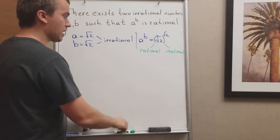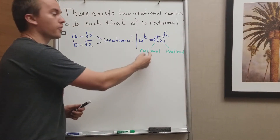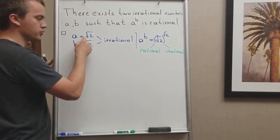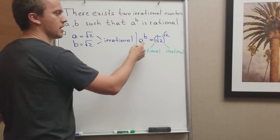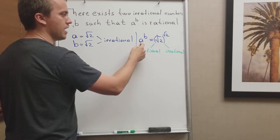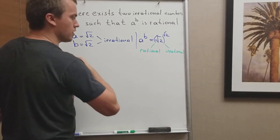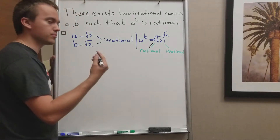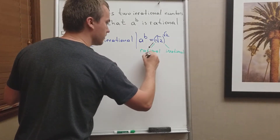So if this expression is rational, then we are done. Why? Because we found two irrational numbers such that a to the power of b is going to be rational. So in that case, if we go this direction, it's going to be rational. So we are done.